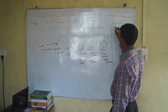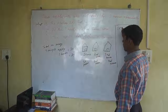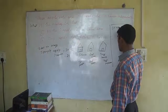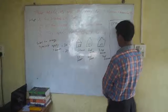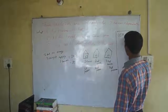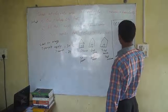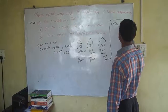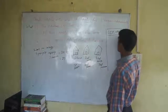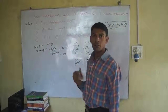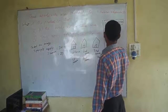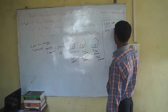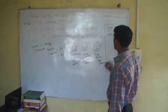For example, first person applies for the first house, and second person applies for the first house, and third person applies for the first house. Like this, we will calculate the ways. Or second person applies for first house, first person applies for second house. Like this, we are calculating all combinations.